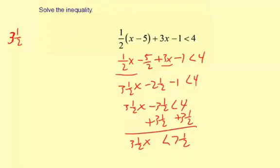It has 3 times 2, which is 6, plus 1 is 7. So that's 7 halves. And then 7 and 1 half, 7 times 2 is 14, plus 1 is 15, so 15 halves. So I can write the inequality as 7 halves x is less than 15 halves.